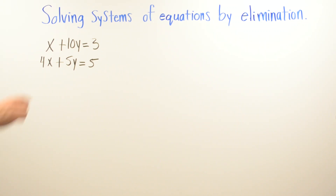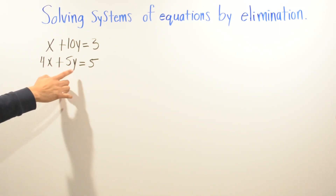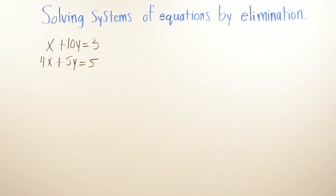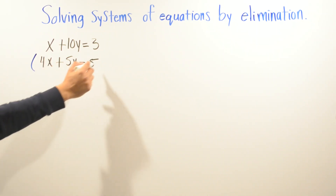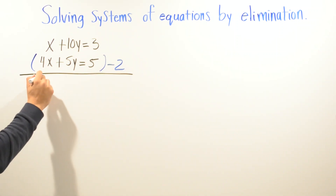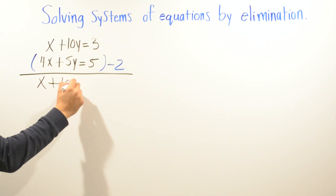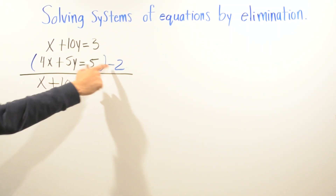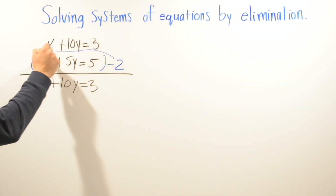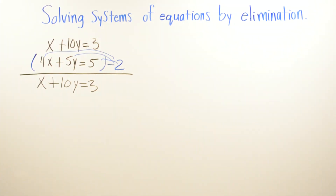In this problem our first equation is x plus 10y equals 3 and our second equation is 4x plus 5y equals 5. I'm going to try to eliminate y because that seems easiest. I'll multiply the second equation by negative 2 so that 5y becomes negative 10y, which will cancel the 10y in the first equation.